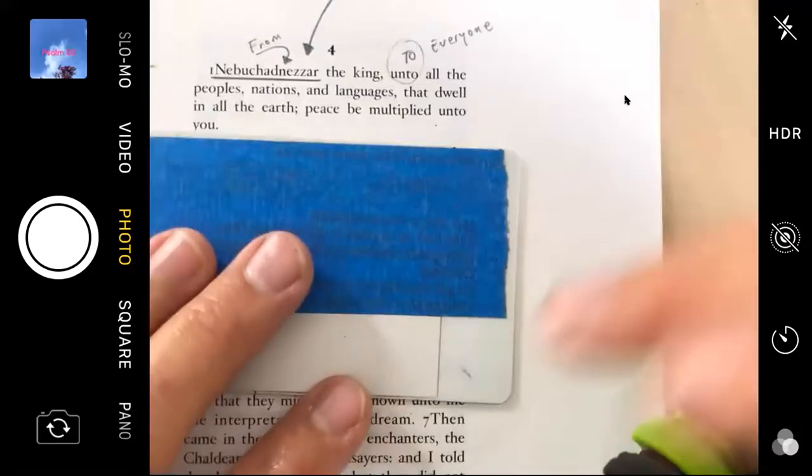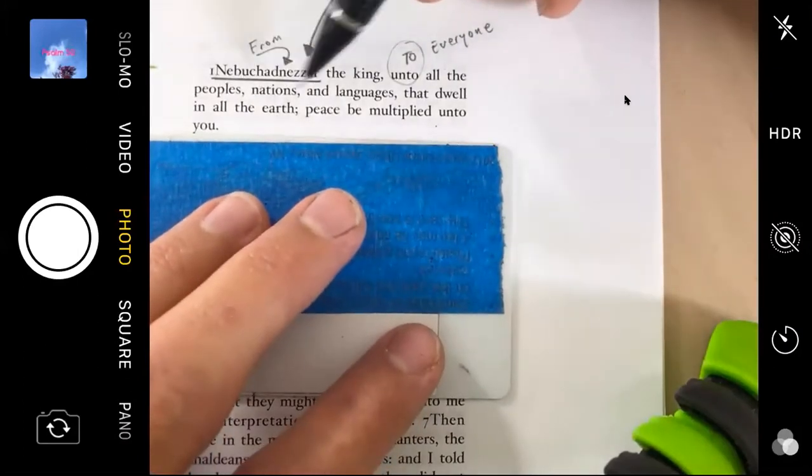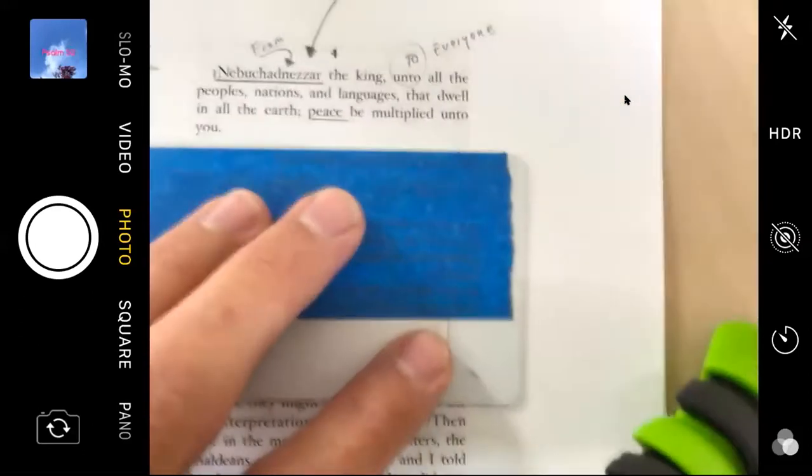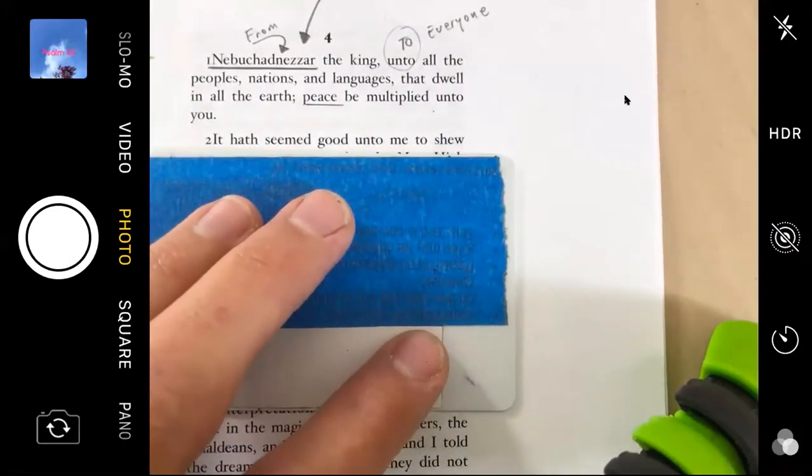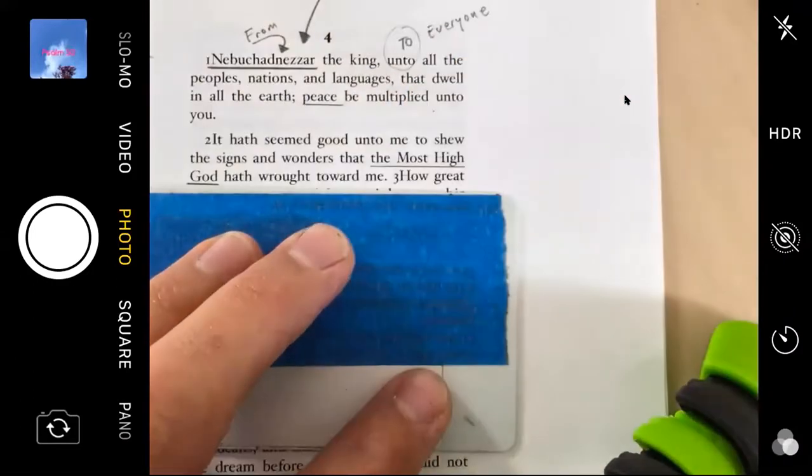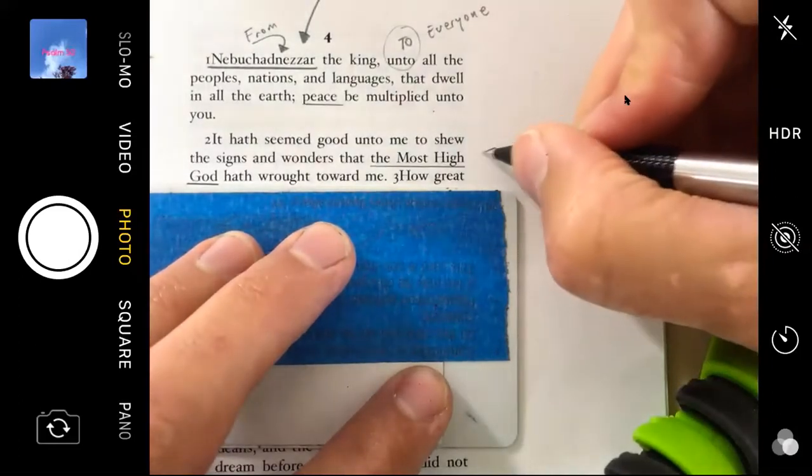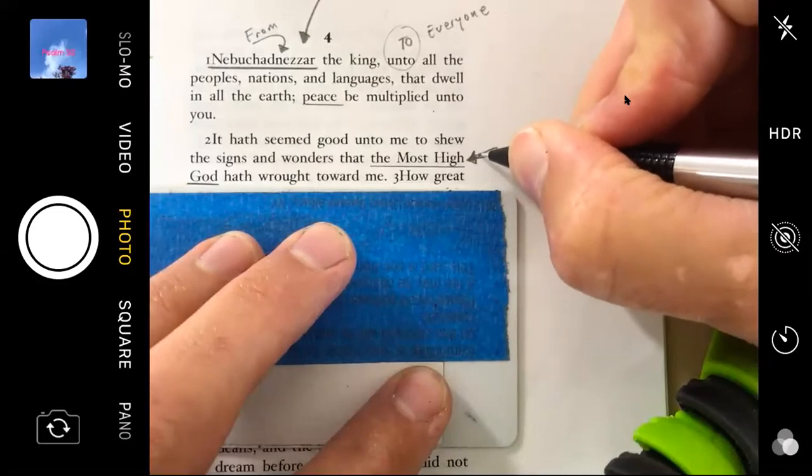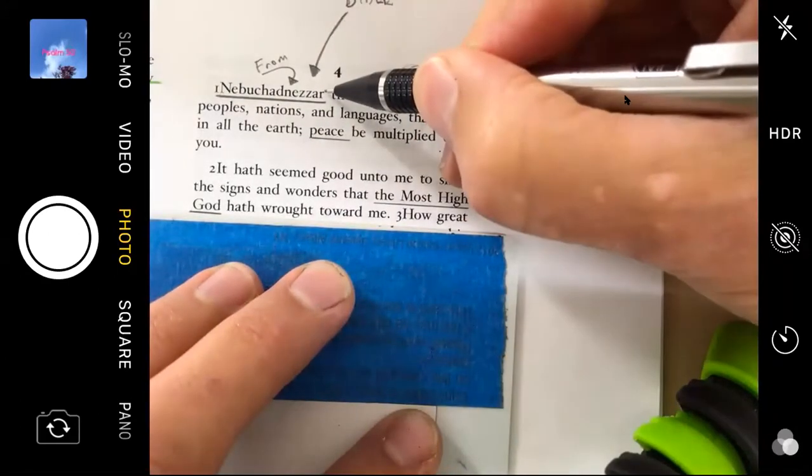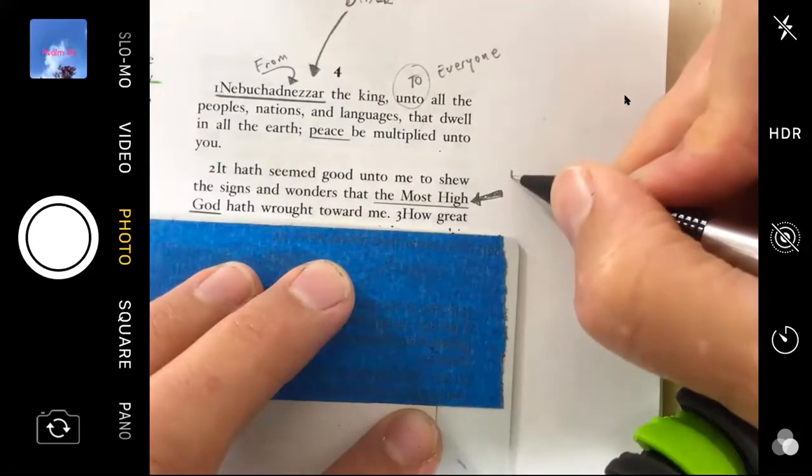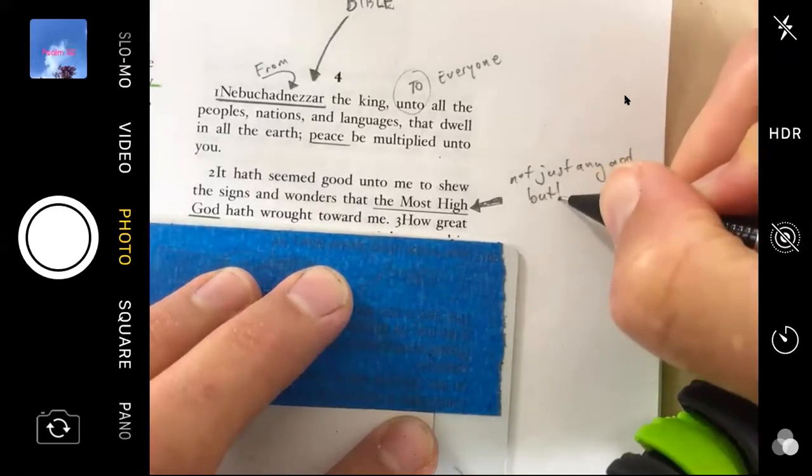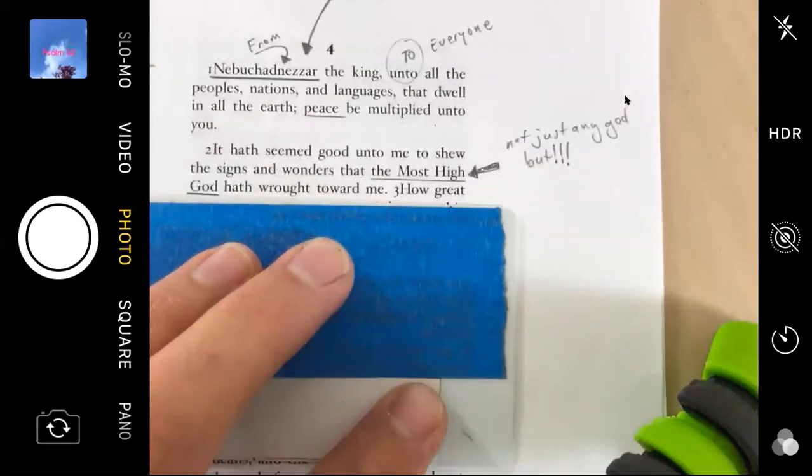Nebuchadnezzar the king, unto all the peoples, nations, and languages that dwell on all the earth, peace be multiplied to you. Well, if he's offering peace, he's in a pretty good mood, don't you think? All right. It has seemed good to me to show the signs and wonders that the Most High God has wrought or done toward me. Who is Most High God? God. In the Bible, we know that Most High God is God. But who's talking about it? It's Nebuchadnezzar. He lives in a land where there's lots of gods, not just any God, but the Most High God. This is a big deal.